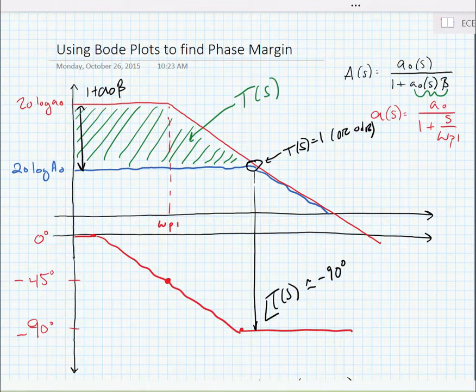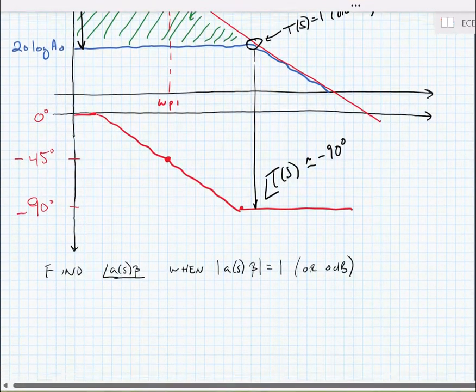Now we know it won't be exactly 90 degrees because the arc tangent only approaches 90 degrees at infinity, but it'll be pretty darn close to minus 90 degrees.